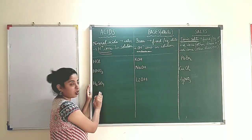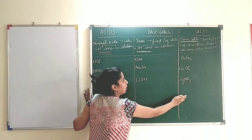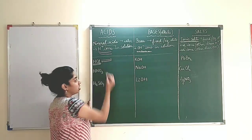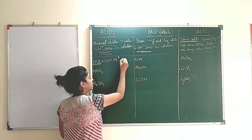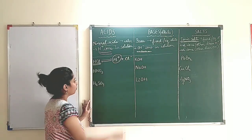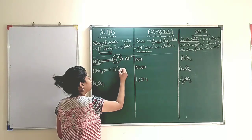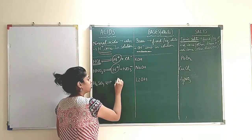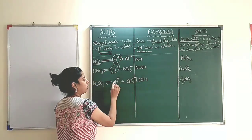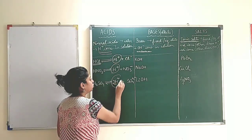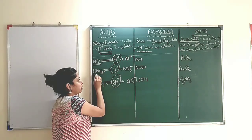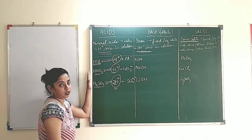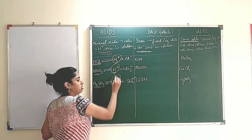Let's see a few examples. Here I have taken strong electrolytes as acids, bases, and salts. HCl when dissolved in water gives out H+ ions and Cl- ions. HNO3 gives H+ and NO3- ions. H2SO4 forms 2H+ and SO4 2- ions. So each molecule of HCl gives 1 H+ ion, HNO3 gives 1 H+ ion, and H2SO4 gives 2 H+ ions. All of them are strong electrolytes because they dissociate completely to give H+ ions.